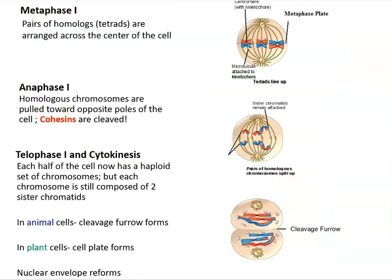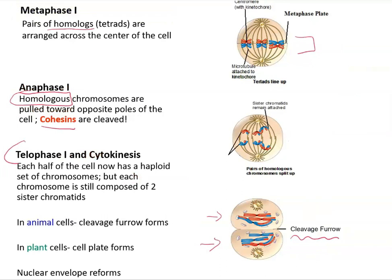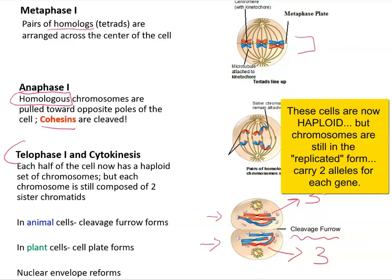Next, the homologous chromosomes — still in a tetrad — are arranged across the equatorial plate, and homologous chromosomes are separated. At the end of telophase 1 and cytokinesis, we get two cells from one. We started with 6 chromosomes and now each cell has 3 chromosomes. So the chromosome number is reduced in half. However, we cannot stop here because each individual chromosome is still a duplicated chromosome made of two sister chromatids, and gametes should not have both identical copies — they should only have one allele of each gene.